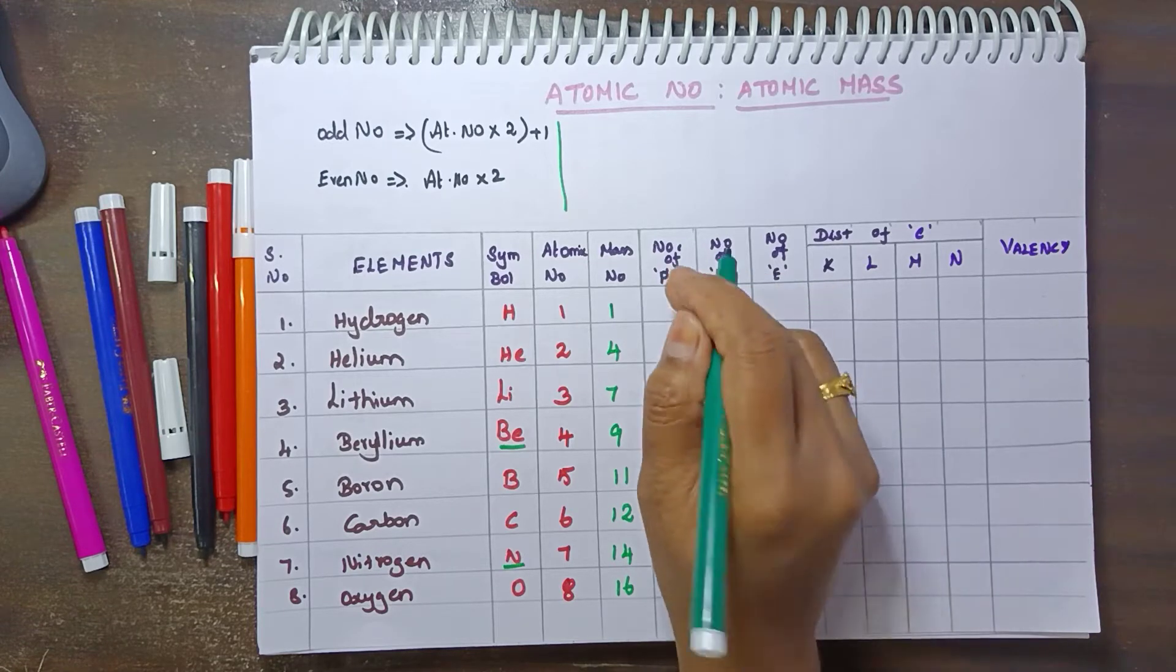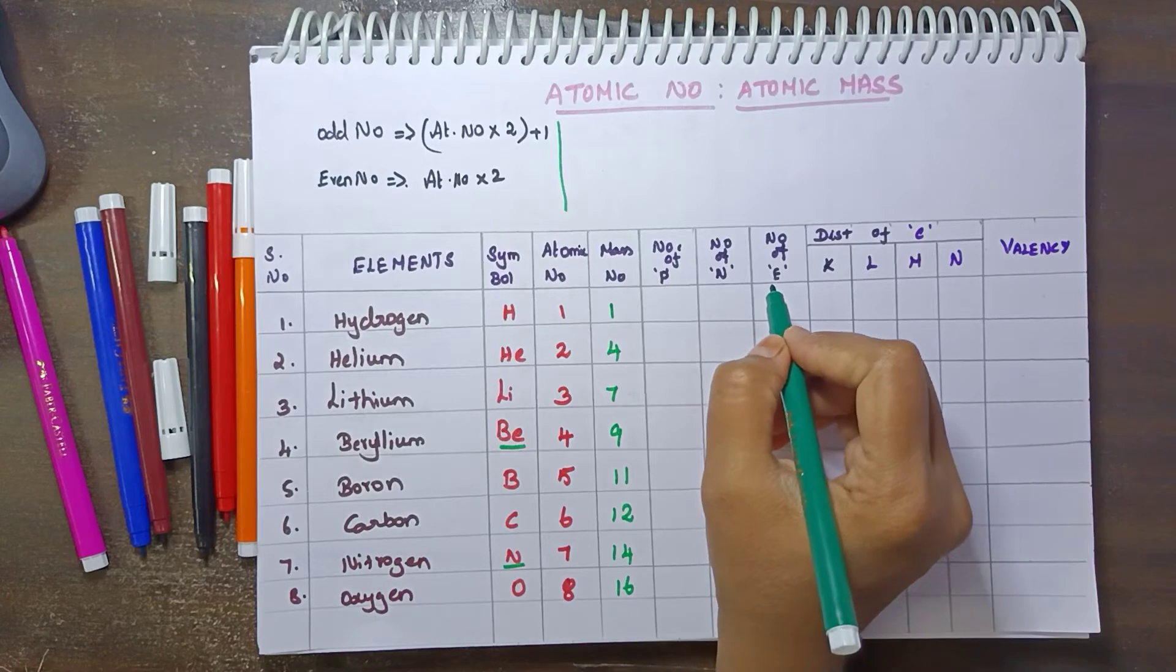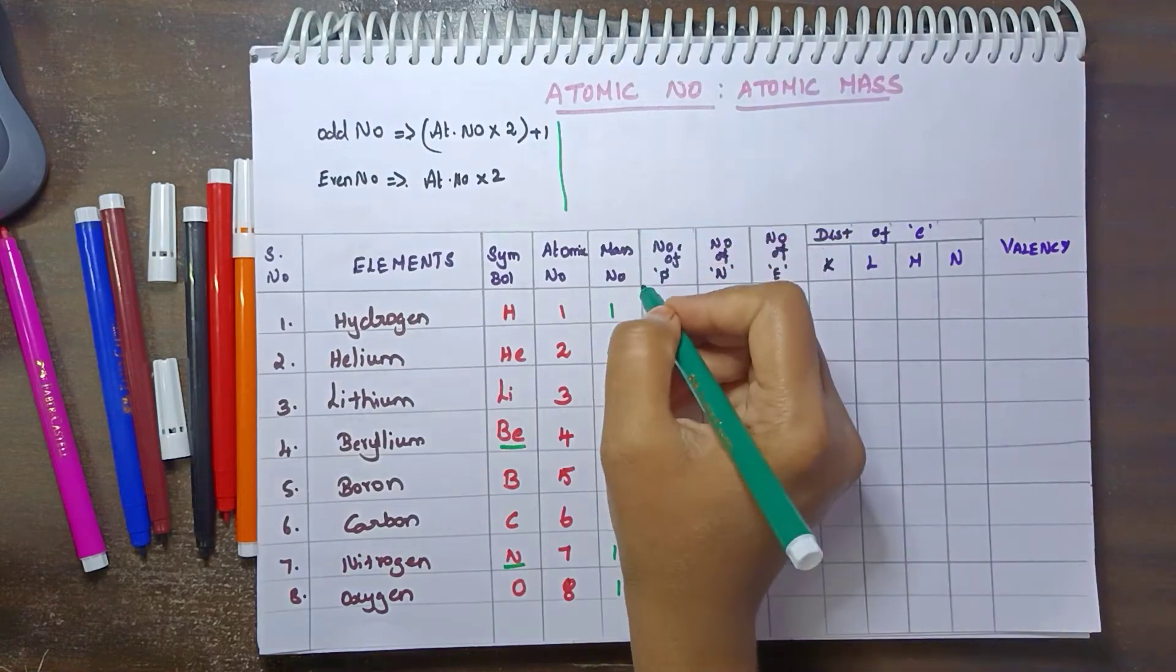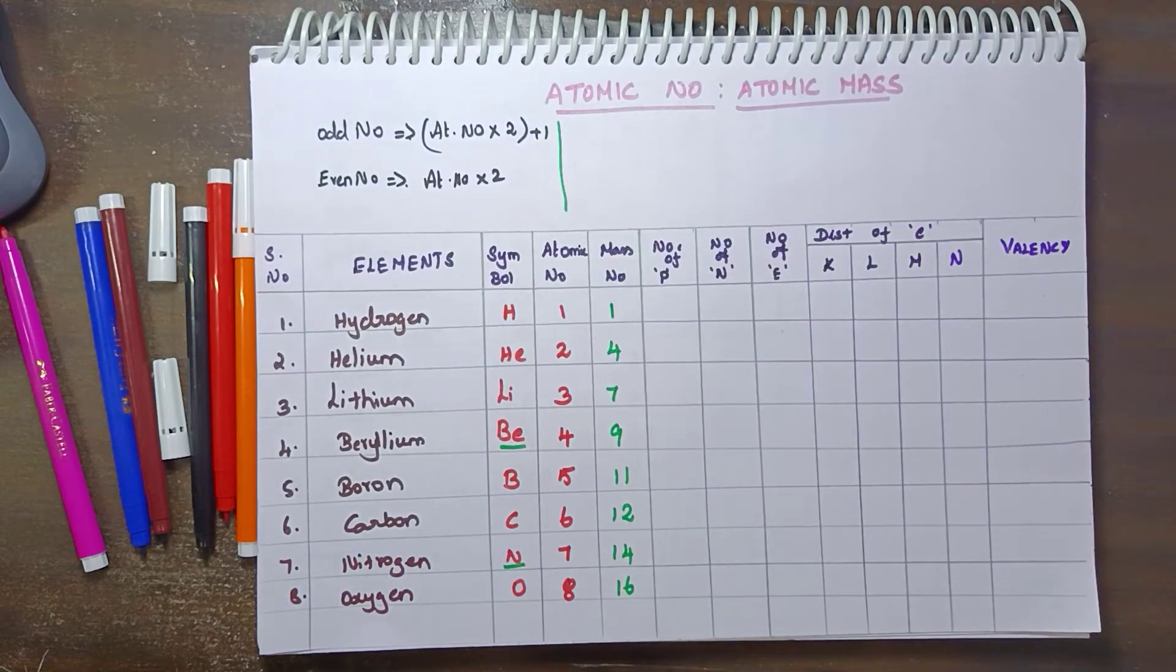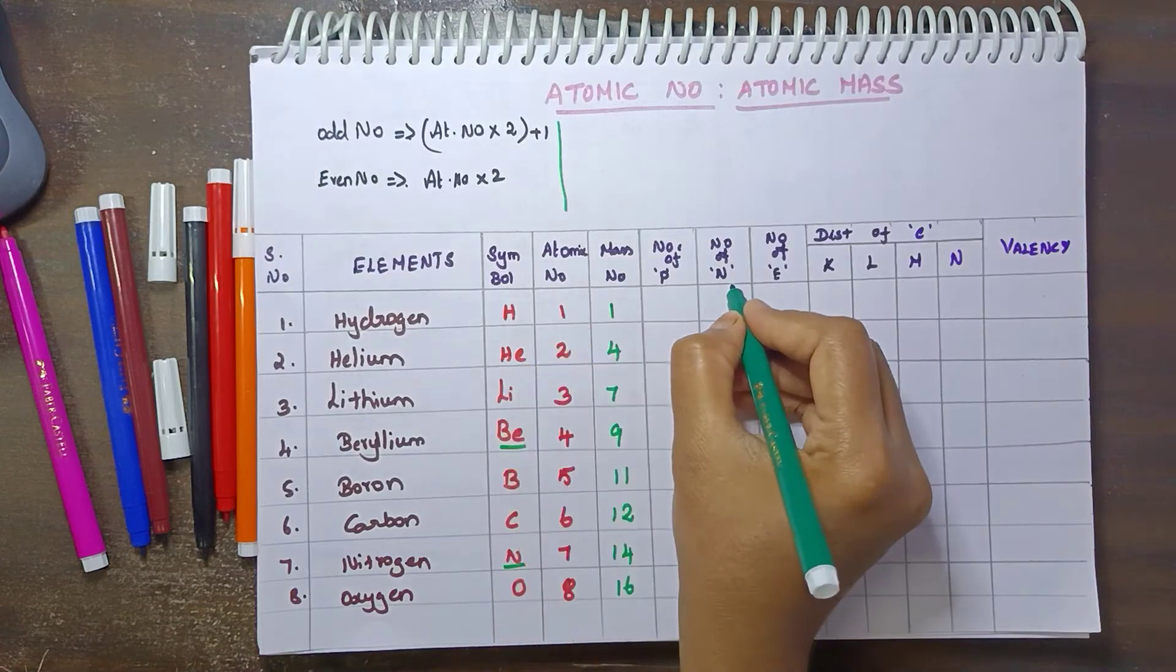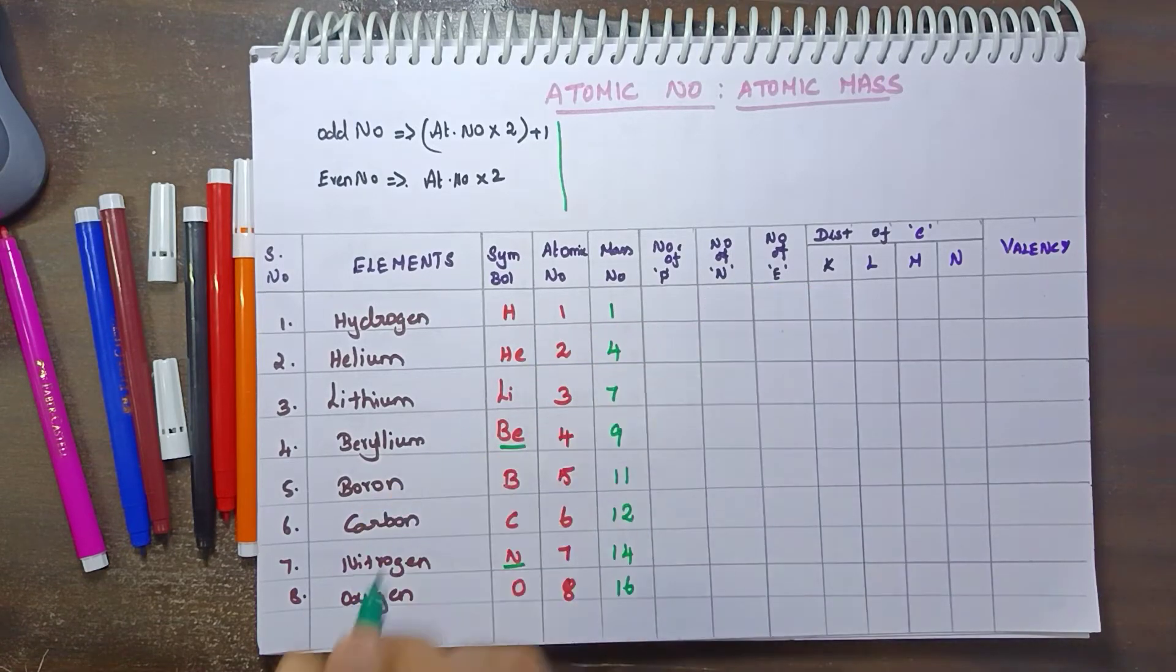If you have to know the proton, neutron and electron, you can know the proton, neutron and electron. So what do you do? You can know the atomic number. What is this? Mass number.